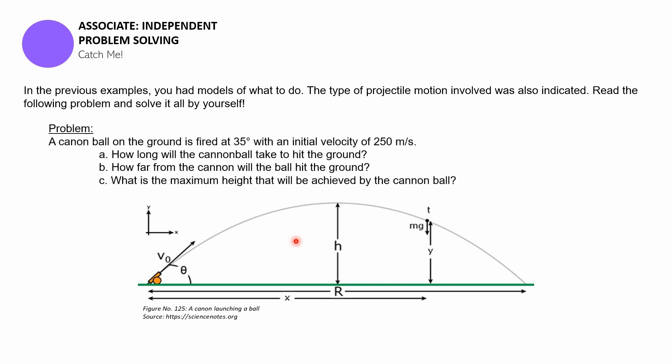All right, so the problem goes like: a cannonball on the ground is fired at 35 degrees with an initial velocity of 250 meters per second. How long will it take for the cannonball to hit the ground and how far from the cannon will the ball hit the ground? And then the last one is what is the maximum height that will be achieved by the cannonball?